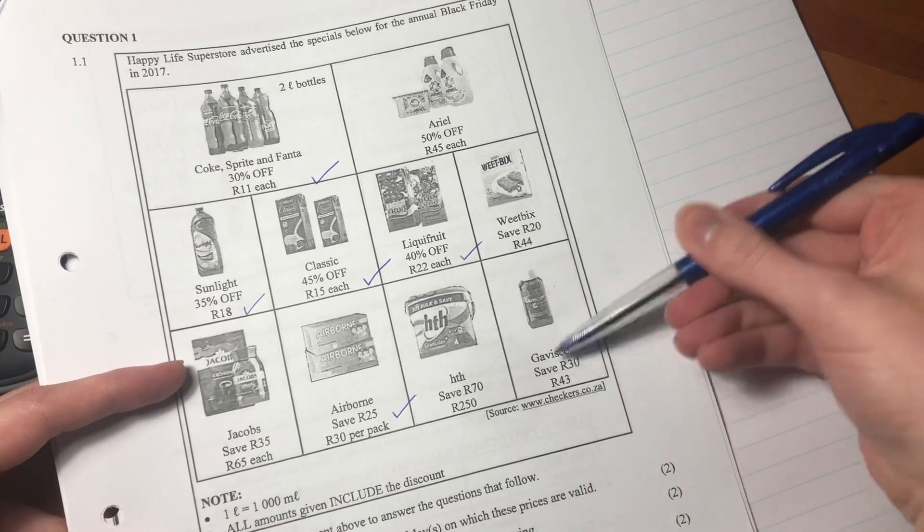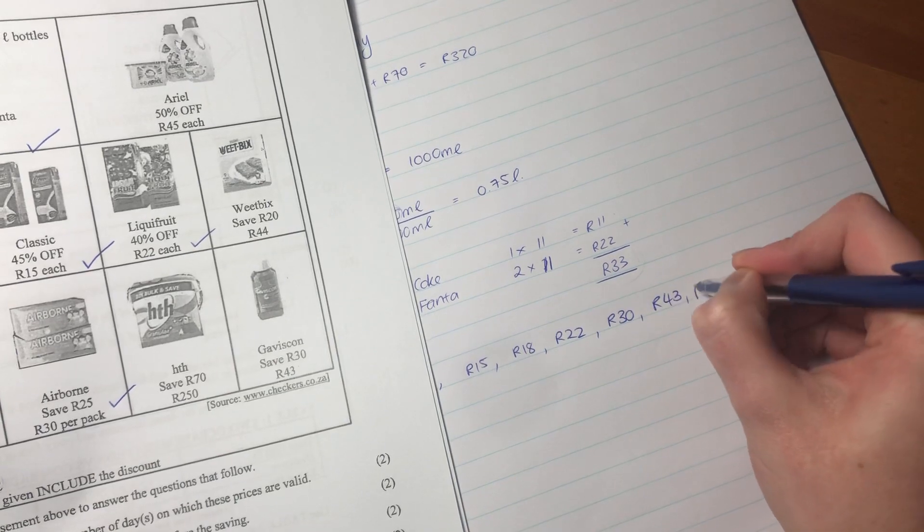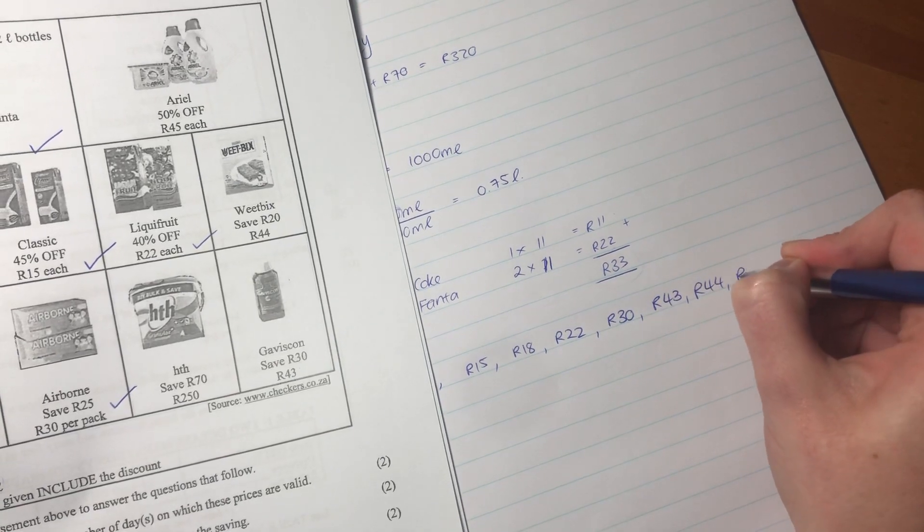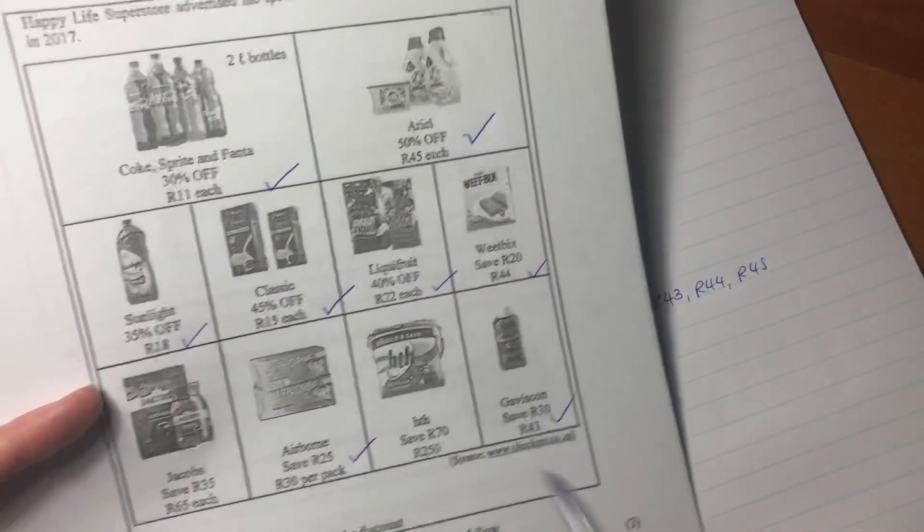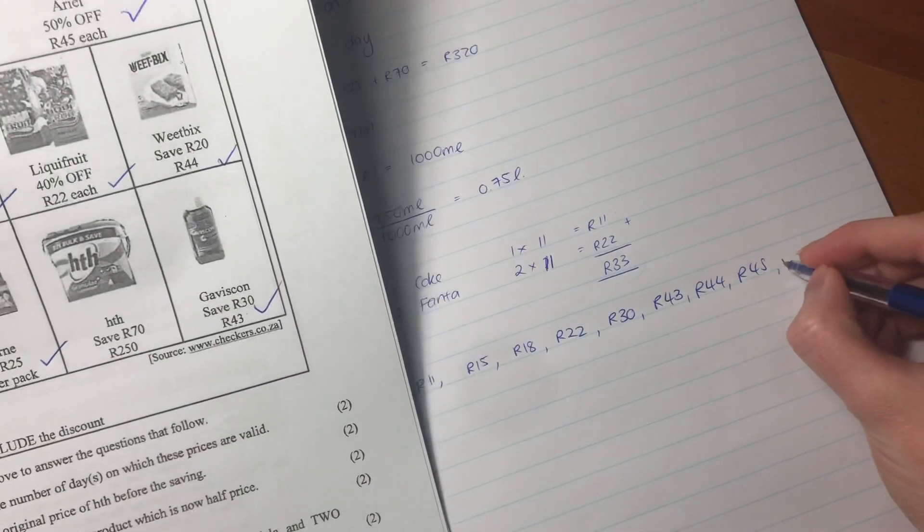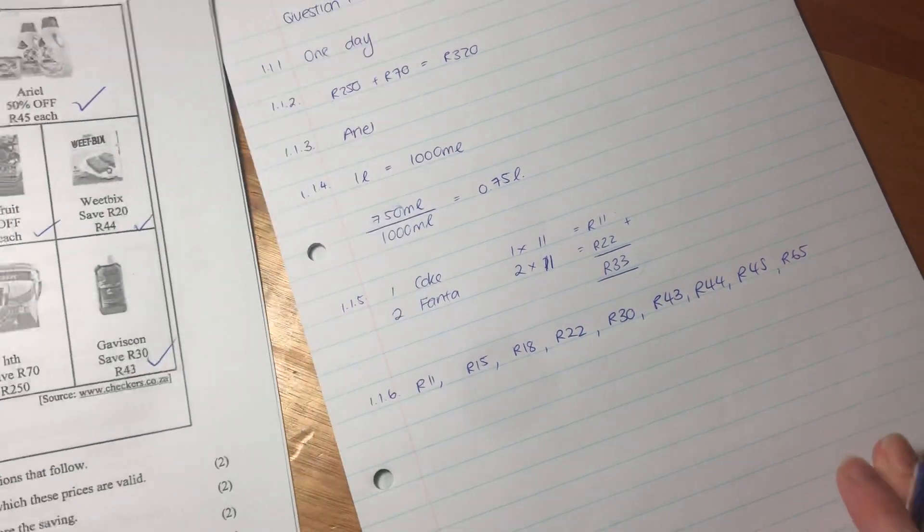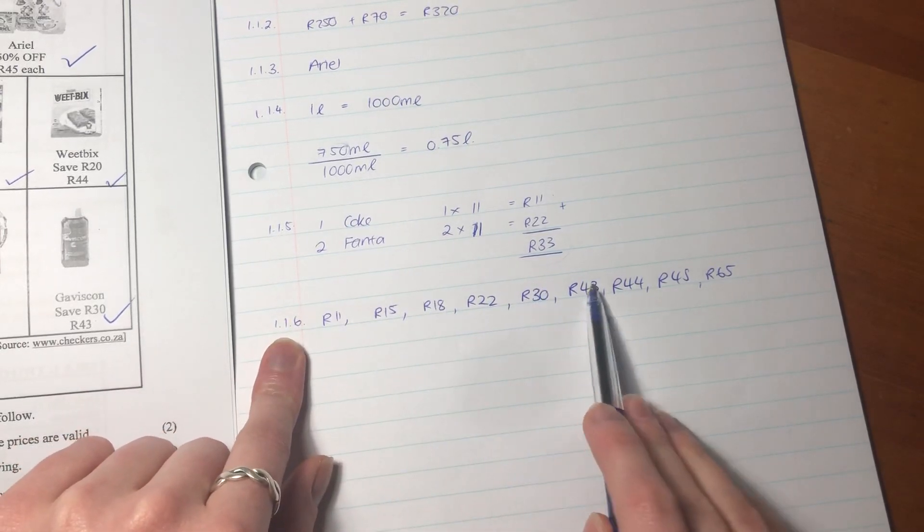Then I'm going to go 30. Almost forgot my Airborne, 30 rand. Then 43. Look, here it goes: 43, 44, 45, so we need to be careful because you could miss one there. I've done 43, 44, and 45. And my last one is Jacobs coffee for 65 rand.